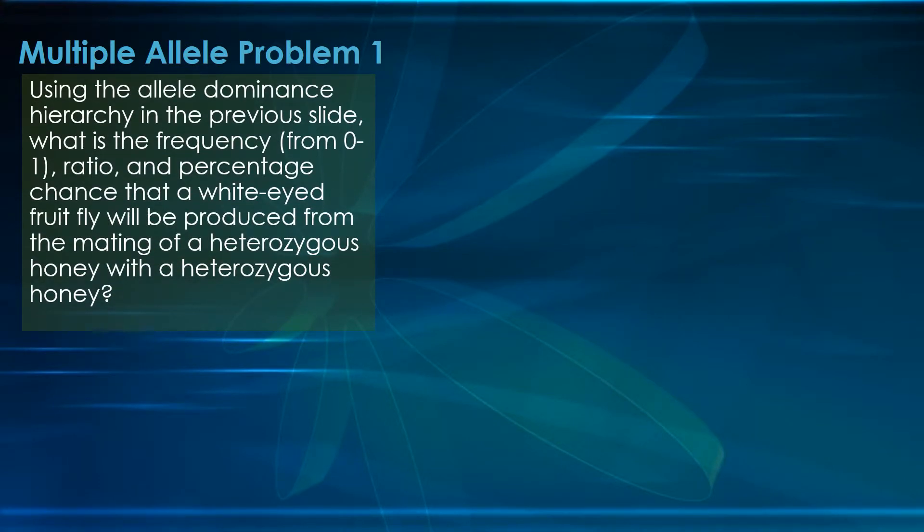We're going to use the allele dominance from the previous slide. Make sure you copy that out. We're going to determine the frequency, the ratio, and the percentage chance that a white-eyed fruit fly will be produced from the mating of a heterozygous honey with a heterozygous honey.